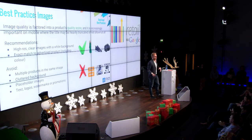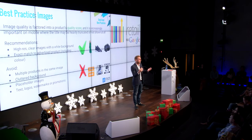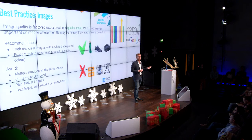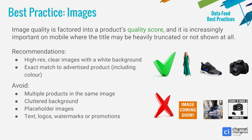Image quality is factored into your quality score, and it's increasingly important with mobile where titles are often truncated or not visible at all. Make sure you have high res, clear images displayed on a white or light colored background — Google recommends 800 by 800 pixel resolution. Make sure the image is an exact match with the product you're advertising, including the color. Things to avoid: multiple products in the same image and cluttered backgrounds will be detrimental to performance, particularly on search results pages where images are really small. Having placeholder images, or images with text, logos, watermarks, or promotions will go against Google policy and get your products disapproved.